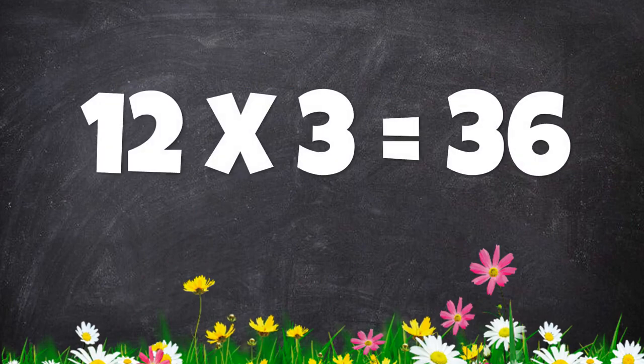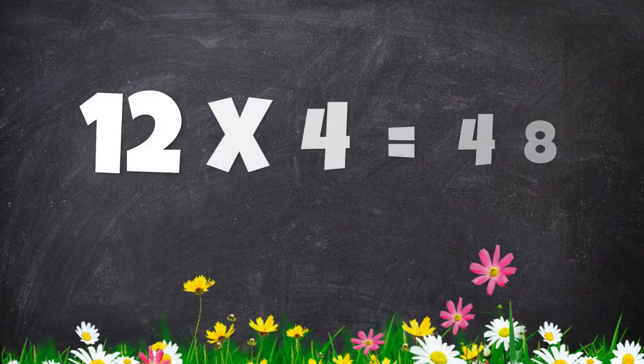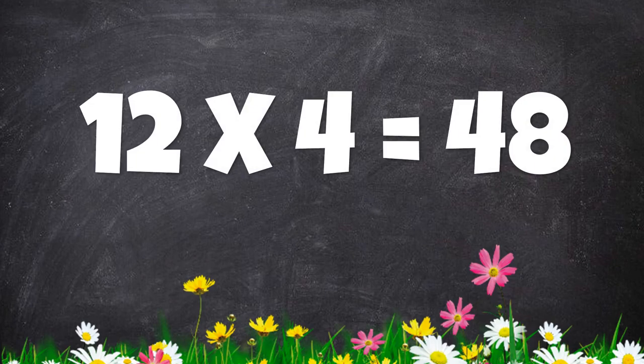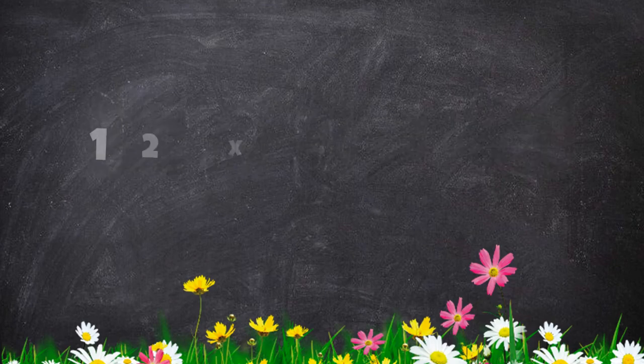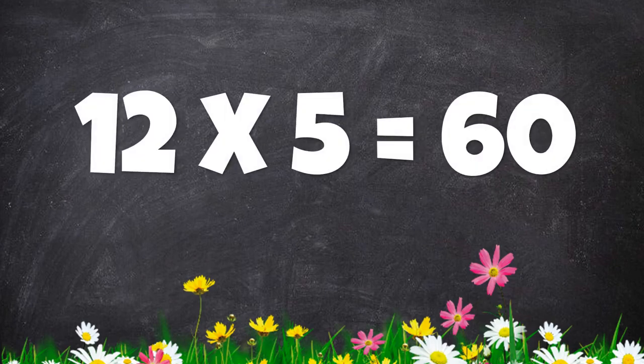Twelve threes are thirty-six. Twelve fours are forty-eight. Twelve fives are sixty.